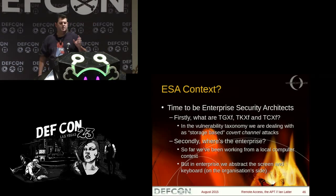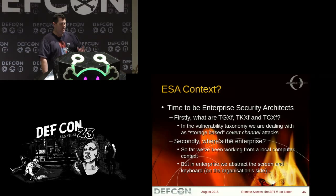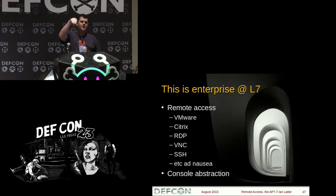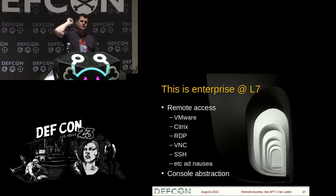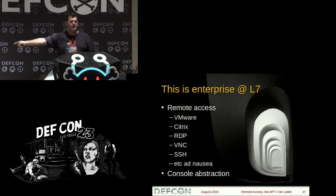Back to the enterprise security architecture context. TGXF, TKXF, and TCXF are a storage-based covert channel attack — some have called it an overt channel because it's so in your face. In the enterprise, we abstract the screen and keyboard so that throughout the organization we stretch that screen and keyboard. If I'm an offshore user in a managed IT service provider, after I've VPN'd in, Citrix'd, VDI'd, SSH'd through every single one of your gates to the deepest part of your organization — the keyboard keystrokes I type here go through all those tunnels to the back, and the screen pixels rendered at the back come all the way out to me offshore. It's a completely clear tunnel through the organization — console abstraction.